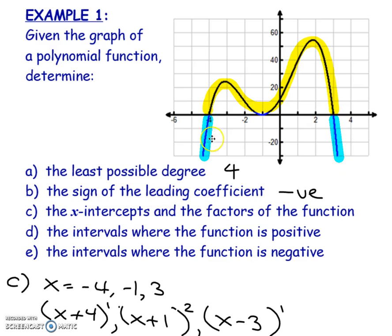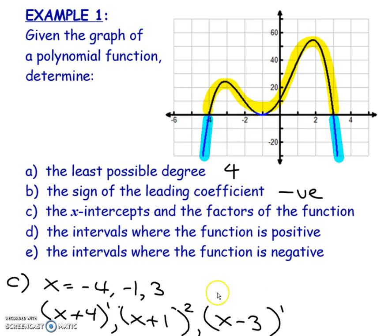The x-intercepts are at negative 4, positive 1, and negative 3, which I've written in the brackets as x minus 4, x plus 1, and x plus 3. The two outer intercepts have odd orders because the graph crosses the x-axis there, but the middle one has an even order because it doesn't cross. Counting 1 plus 1 plus 2 gives a degree 4 polynomial.